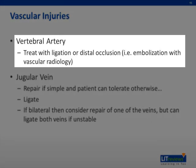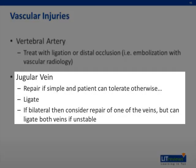For vertebral artery injuries, they are commonly treated with ligation or distal occlusion. Ligation can be done operatively, and distal occlusion can be performed by a vascular radiologist using embolization with coils. For injuries to the jugular vein, if it is a simple injury, repair is indicated. One must also consider the hemodynamic status and overall condition of the patient. Should the patient be in extremis, the time taken for repair may not be appropriate, and ligation of the jugular vein is appropriate. If there is bilateral injury, repair of one side would be considered; however, if the patient is unstable or in extremis, ligation of both veins may be necessary.